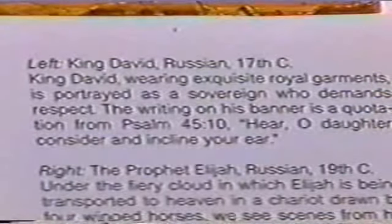We are on page 185 of the archaeology book 'The Icons: The Fascination and the Reality'. The earth helped the woman, and the earth opened her mouth and swallowed up the flood. The earth represents the archaeology books we're opening up and destroying the lies being taught about our forefathers. Now scroll up to the caption. It reads: Left — King David, Russia, 17th century. King David, wearing exquisite royal garments, is portrayed as a sovereign who demands respect. The writing on his banner is a quotation from Psalm 45:10: 'Hear, O daughter, consider and incline your ear.'